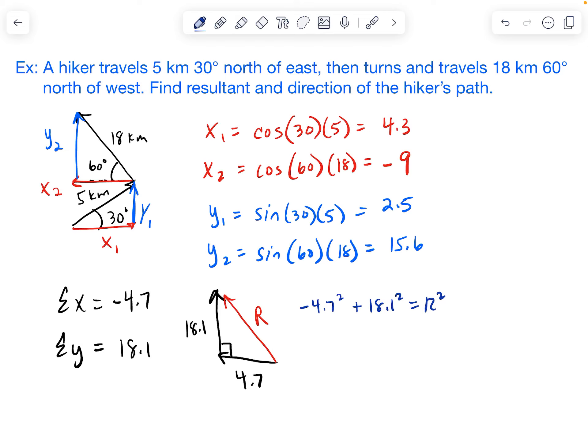So we get 349.7. And then we need the square root. And so we get a total of 18.7 kilometers as the resultant.